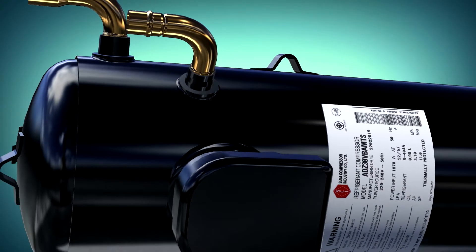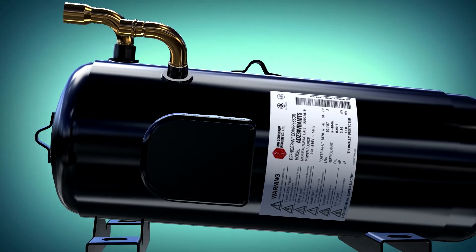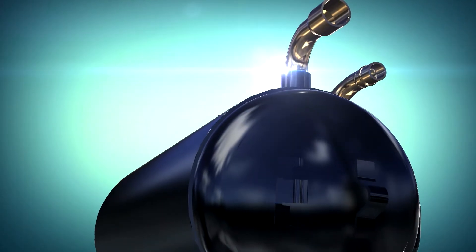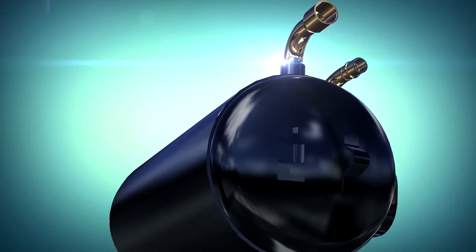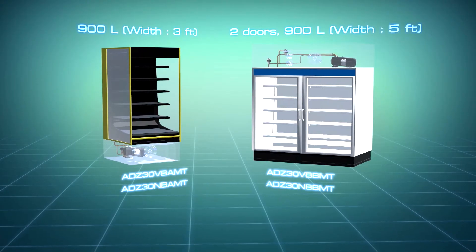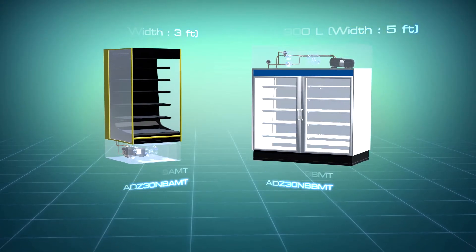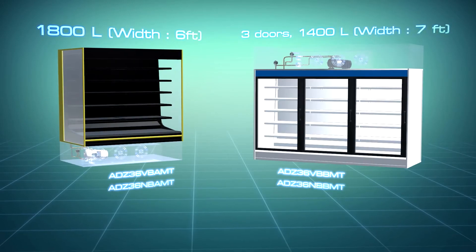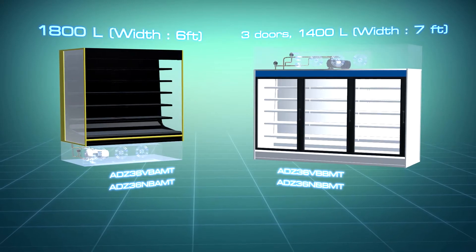ADZ Horizontal Compressors come in different sizes to match suitably with refrigerator sizes, including small compressor models for small refrigerating units, medium size compressor models for medium size refrigerating units, and large compressor models for large refrigerating units.